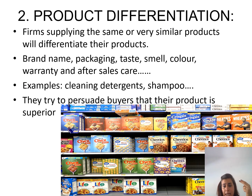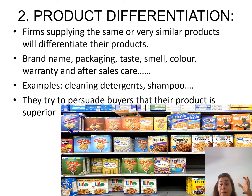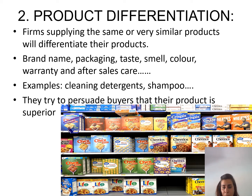The second feature is product differentiation. Firms supply very similar products to each other, but they make their product a bit different. For example, all cereals are essentially cereal, but you have different brands with different packaging. They may also have different after-sales care and customer service. Another example is cleaning detergents — each claims to be the best, whitening clothes more than the rest. They differentiate their product to persuade buyers that their product is superior in the market.